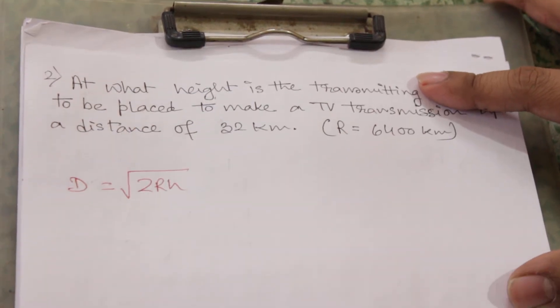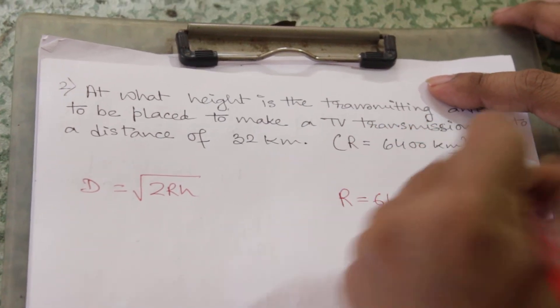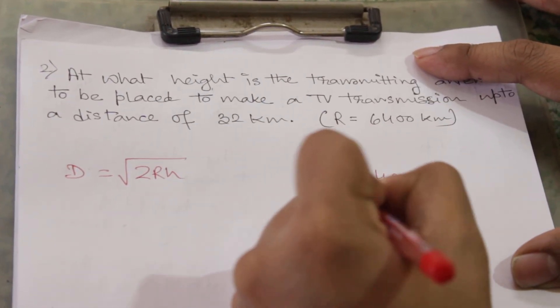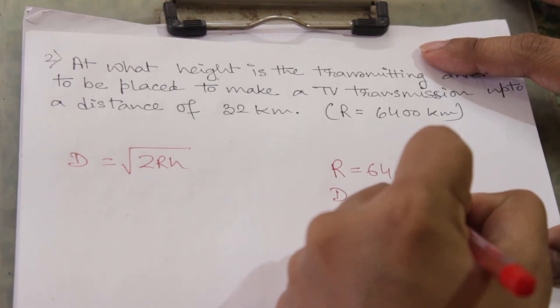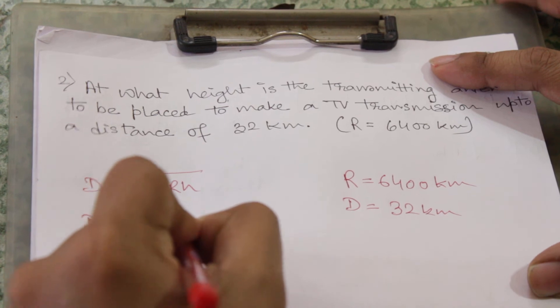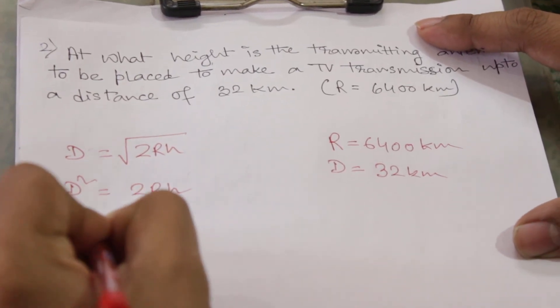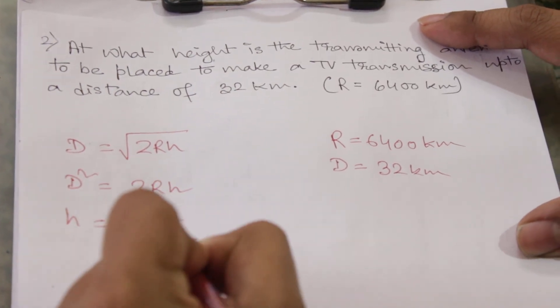R is here 6400 kilometers, D is given as 32 kilometers. So this formula becomes, if we square both sides, this will become like this and h will be equal to D squared by 2R.